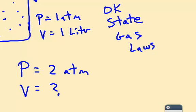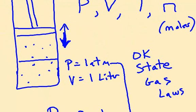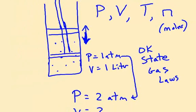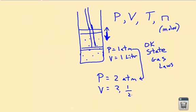Now we want to do some math. We did it qualitatively before — we learned that if you increase the pressure, it will decrease the volume; they're inversely proportional. Math people will recognize: if the pressure is doubled, the piston goes down and the volume is going to be one-half of what it was in the beginning. So if the pressure is doubled, the volume will be halved.